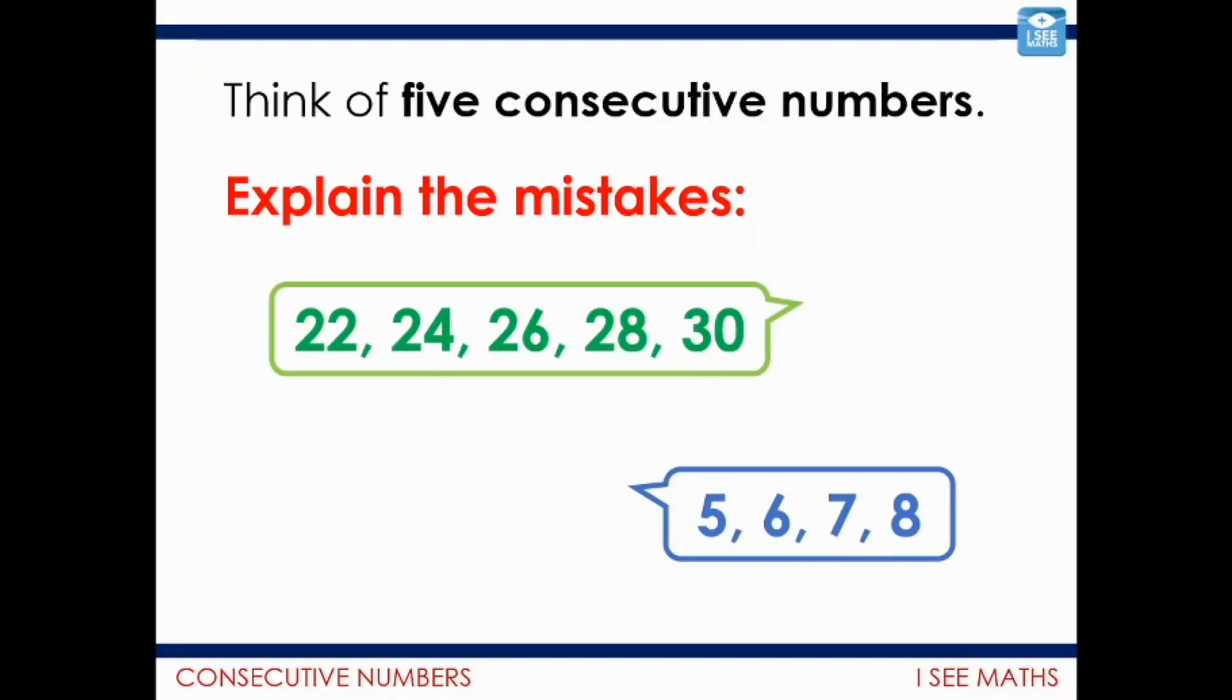Now, our task involves calculating and using consecutive numbers. Consecutive numbers are numbers that go up in a count of 1. I once gave this task to my class and here were some of the responses. And these are non-examples, so these were incorrect. What I want you to do is just have a quick look and think, what mistake did the children make in each case?